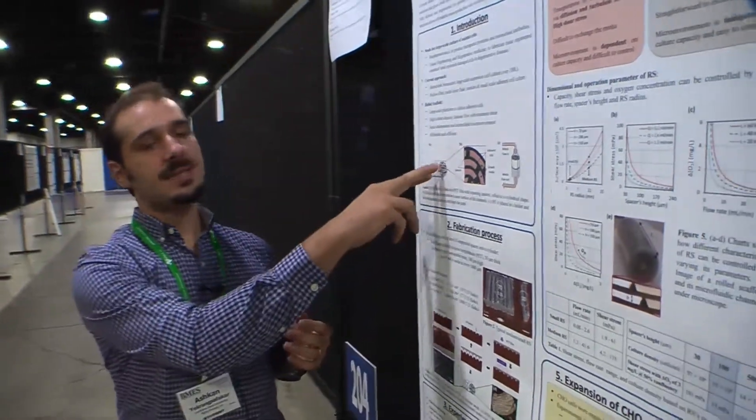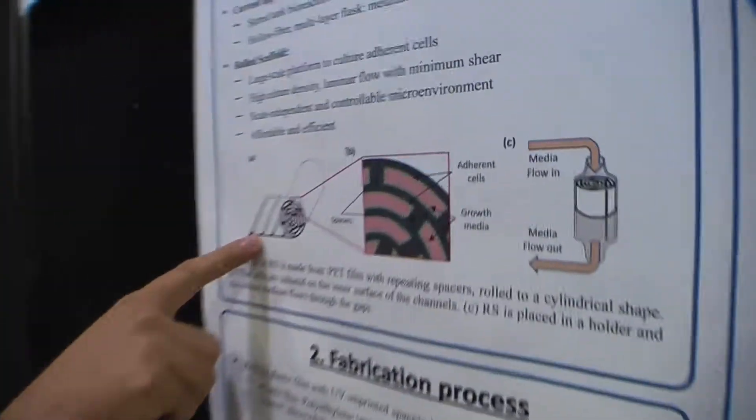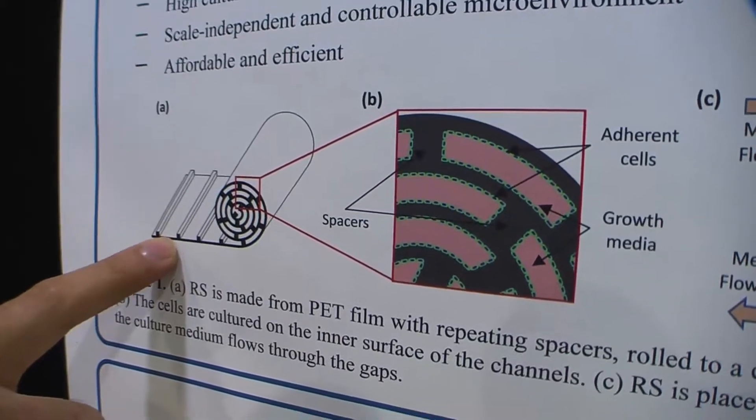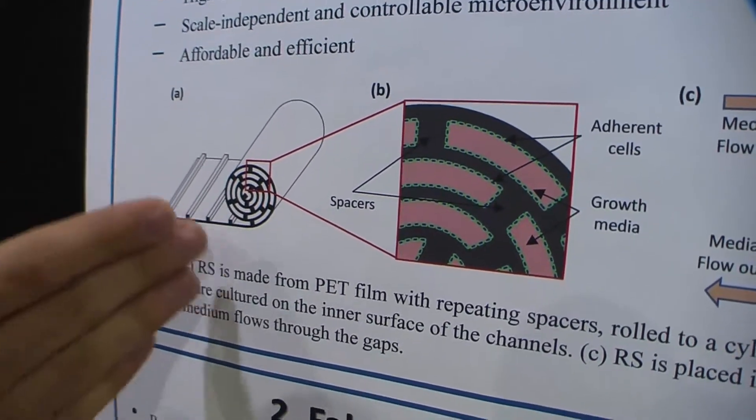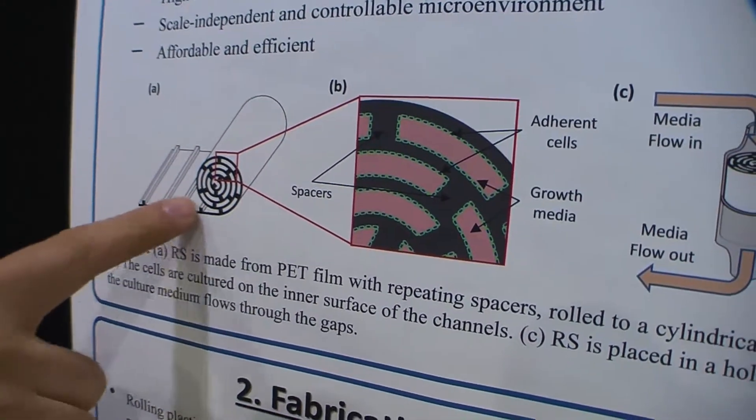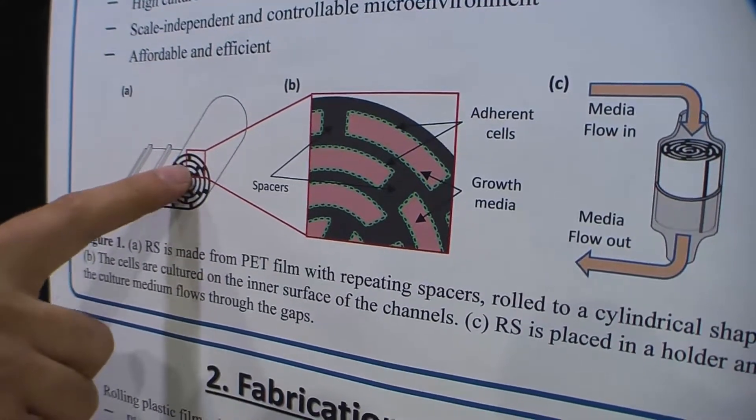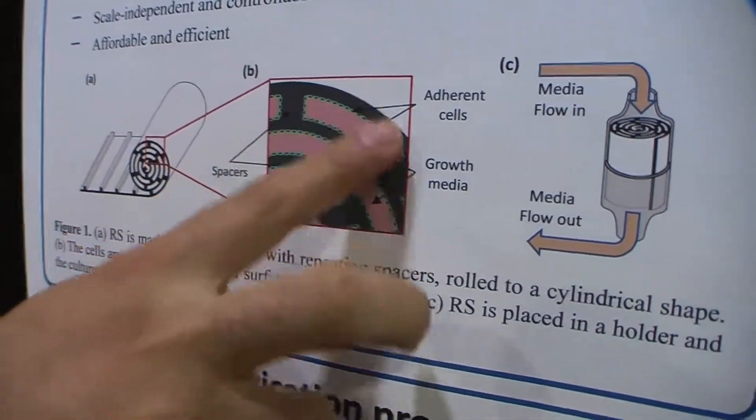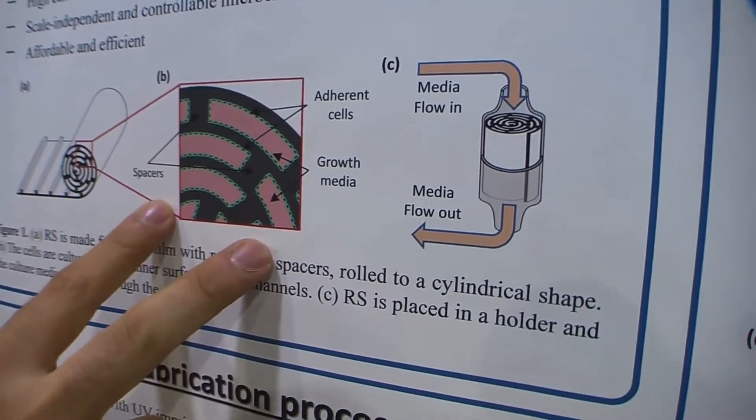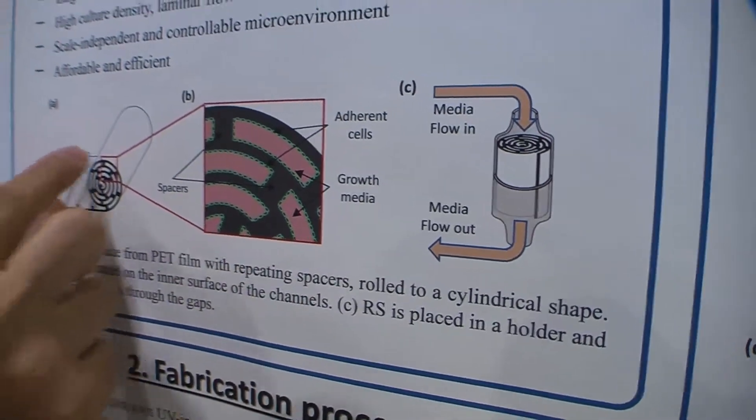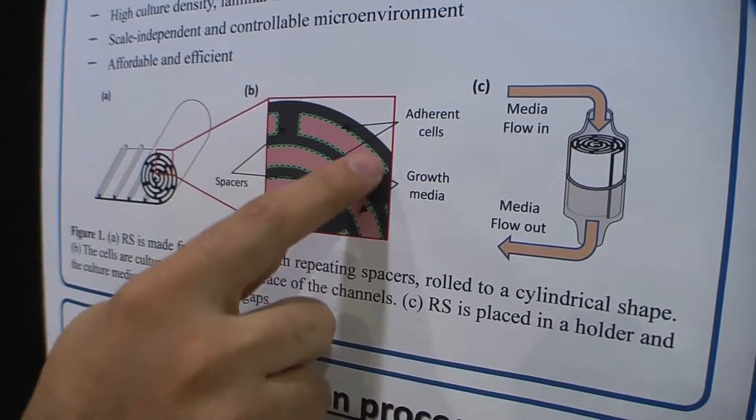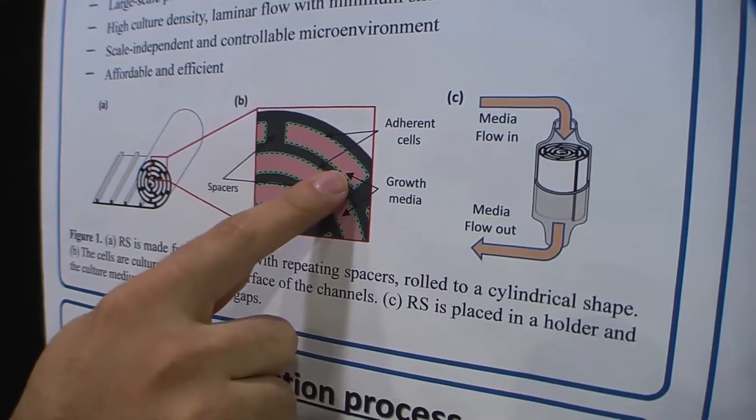It consists of plastic sheets with spacers that have a height of 100 micrometers every one millimeter. When you roll these plastic sheets on themselves, they form microfluidic channels, which you can see in this picture. Cells grow on the surface of these plastic sheets, on the side walls of these microfluidic channels.